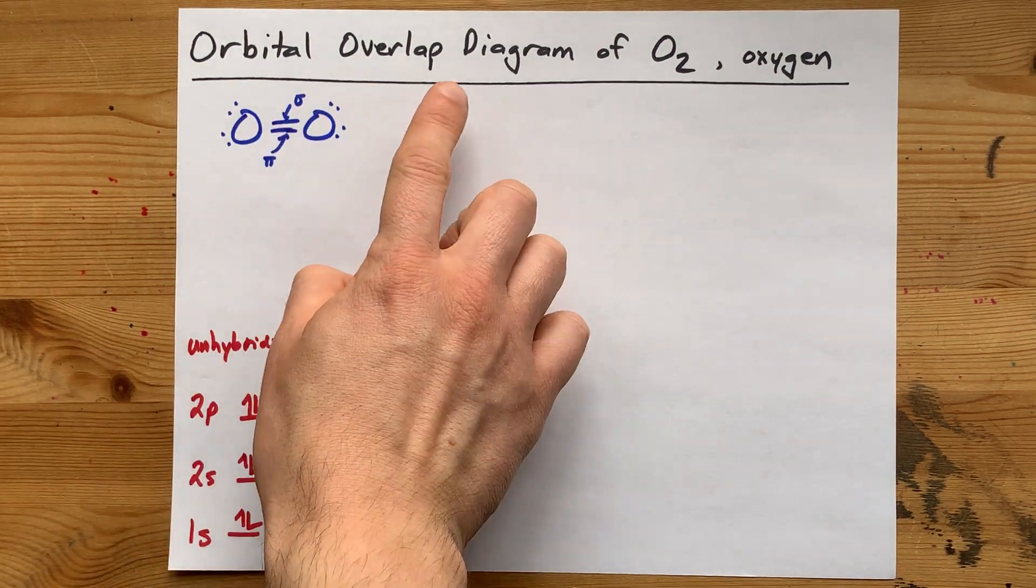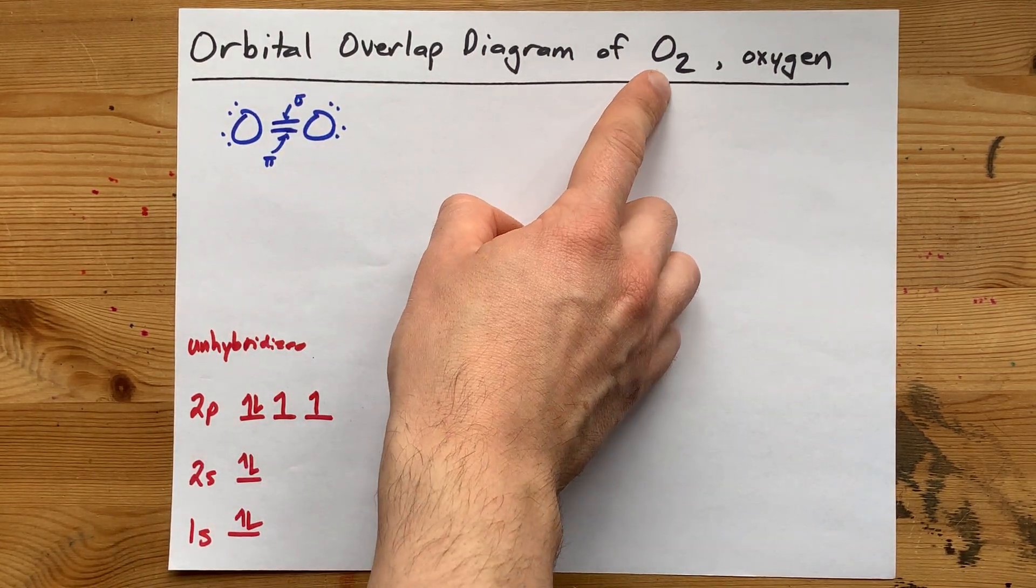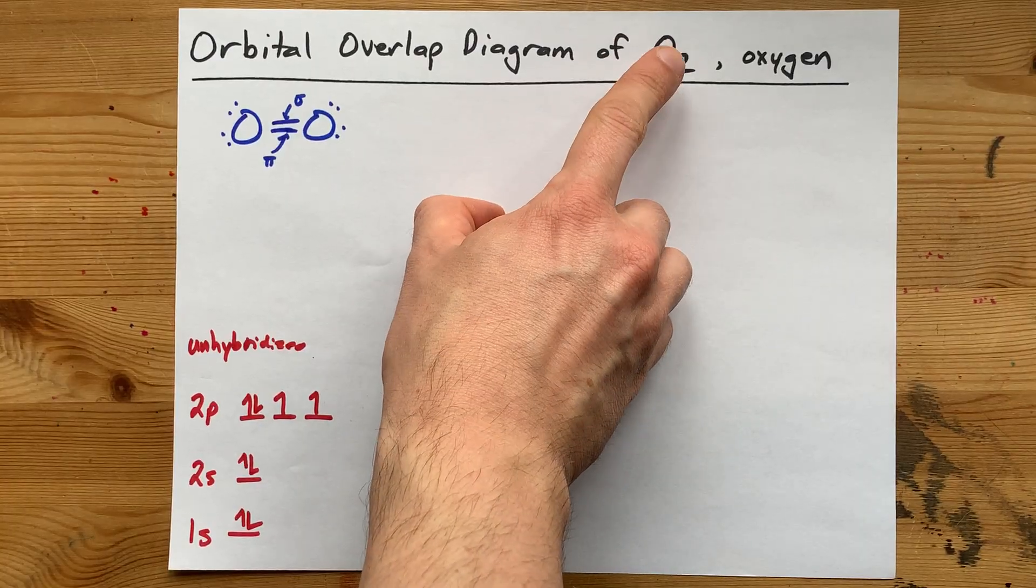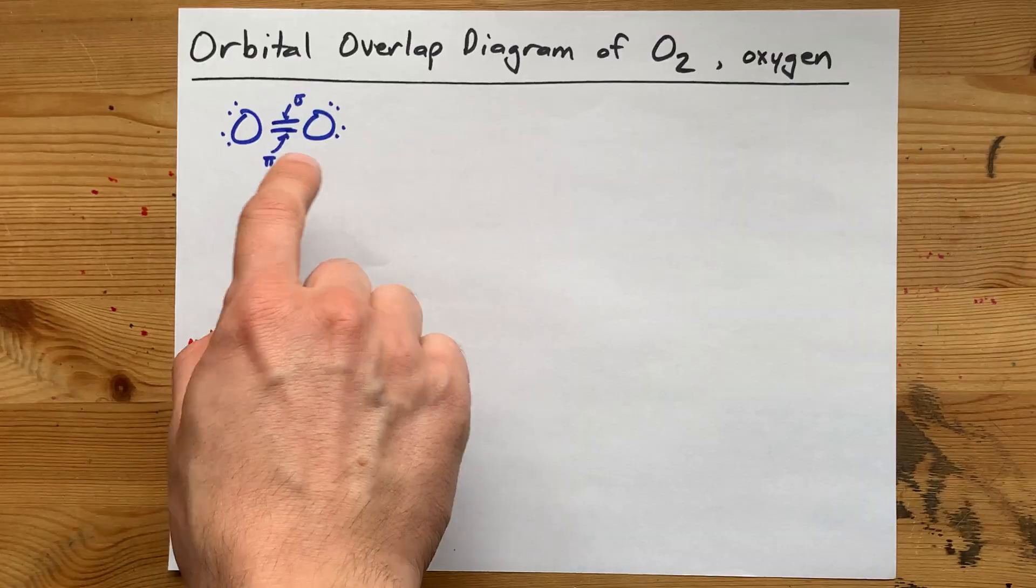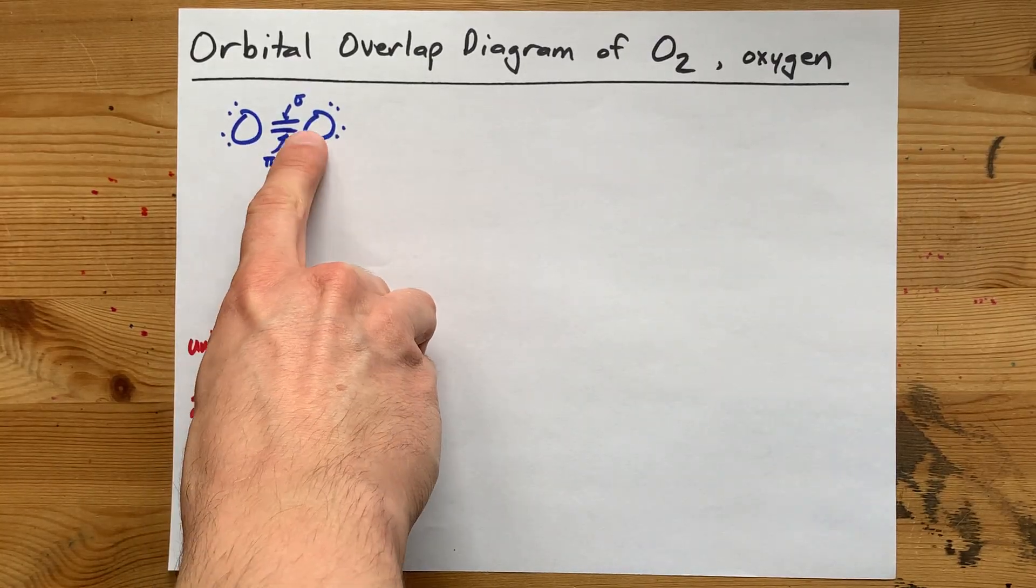We're going to draw the orbital overlap diagram for molecular oxygen, that is the molecule O2. Now this video is going to assume there is a double bond between those two atoms.